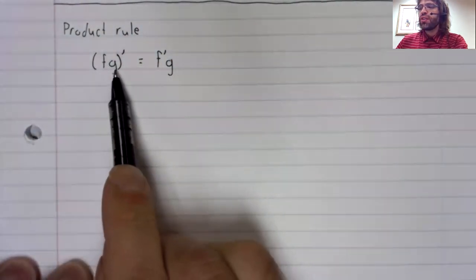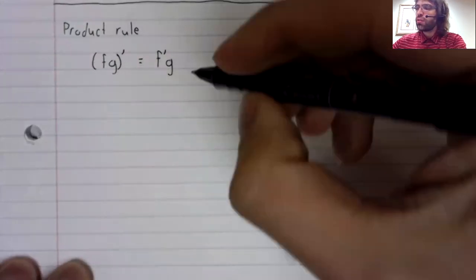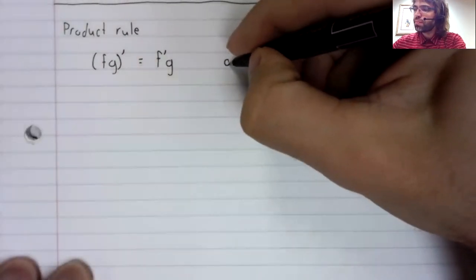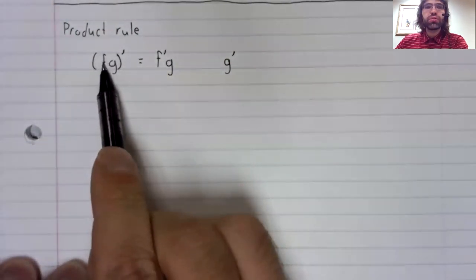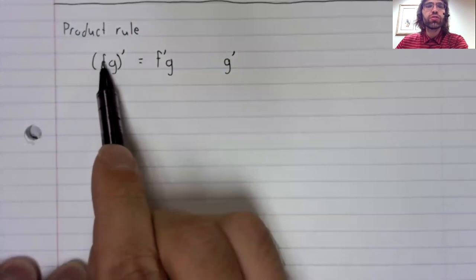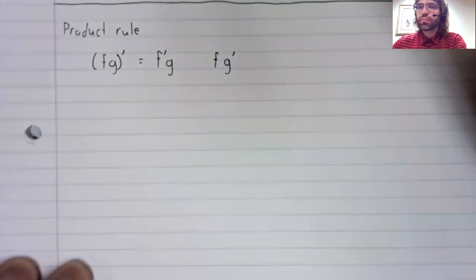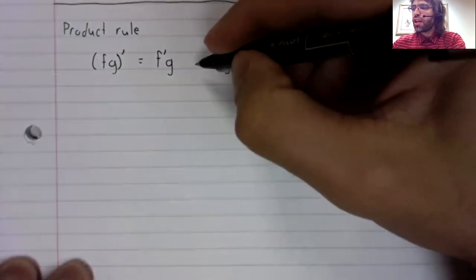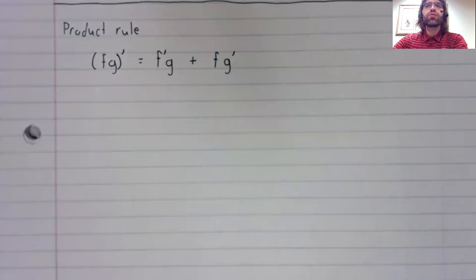And then we differentiate the second function and multiply it by the first function. And then we add those terms together.